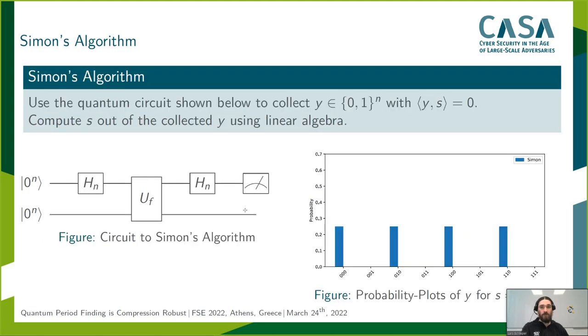This algorithm uses quantum access to f in the circuit below, to sample uniformly at random y's that are orthogonal to s. After collecting n-1 linearly independent vectors y's, the algorithm then calculates s via Gauss from the collected y's. Thereby, it holds that expected about n+1 random sampled y's are sufficient to collect n-1 linearly independent vectors.